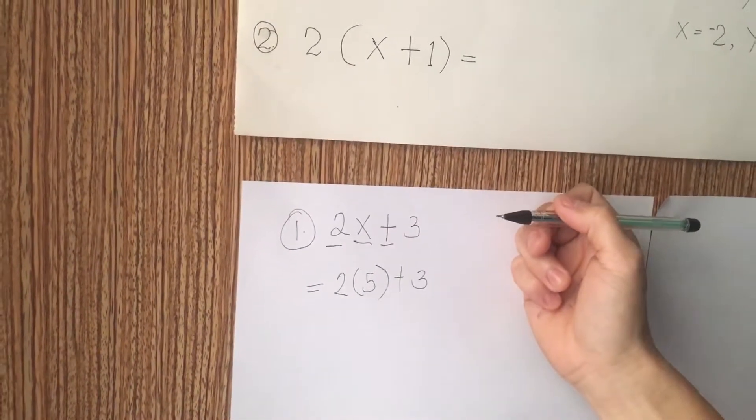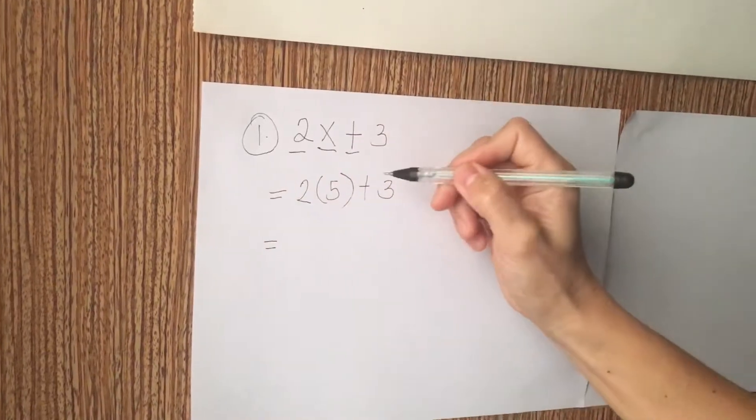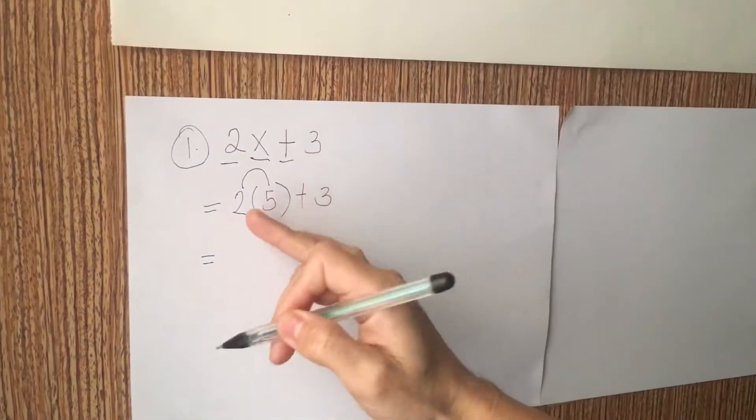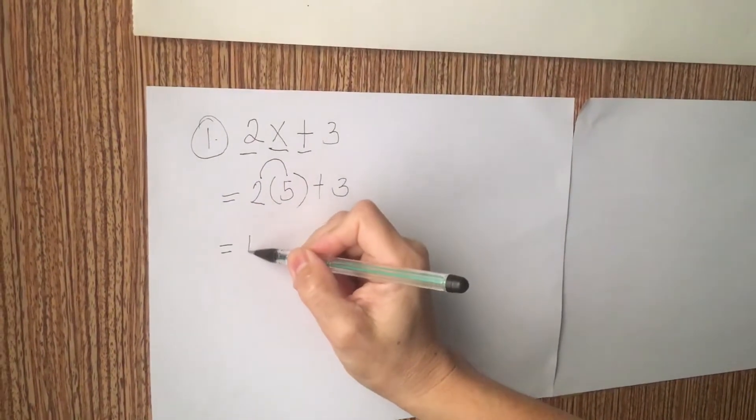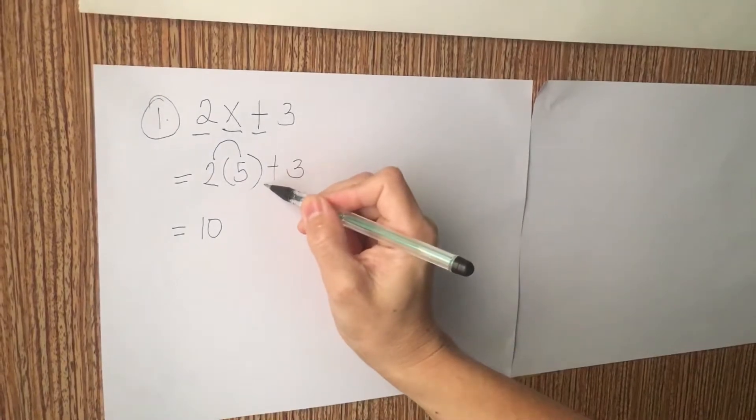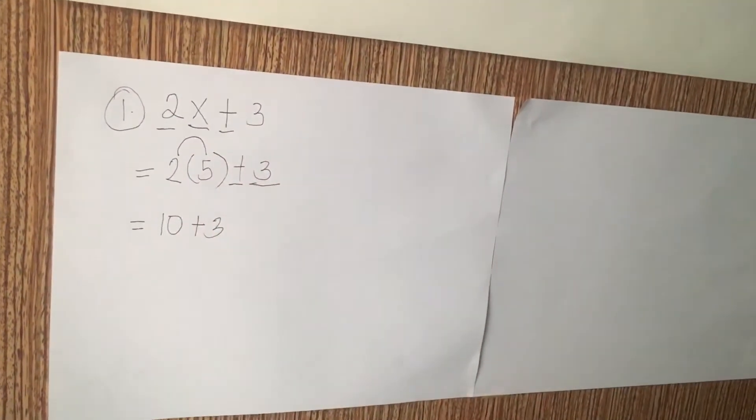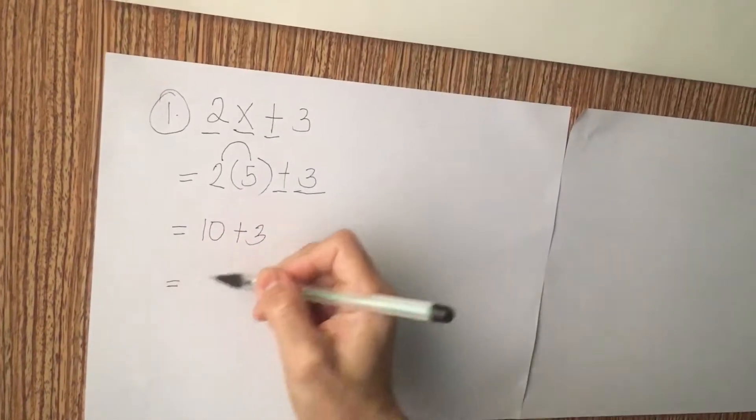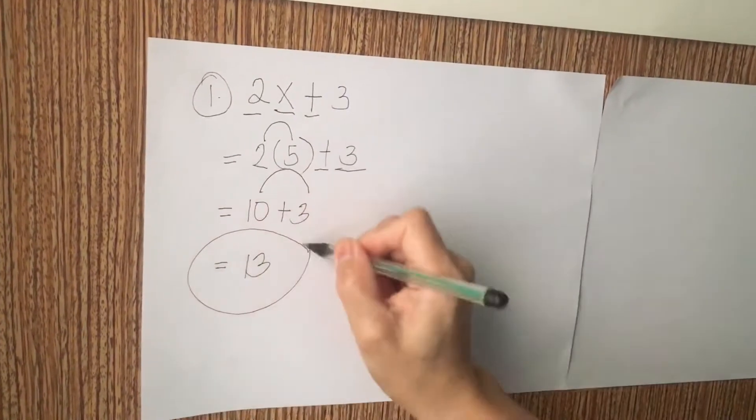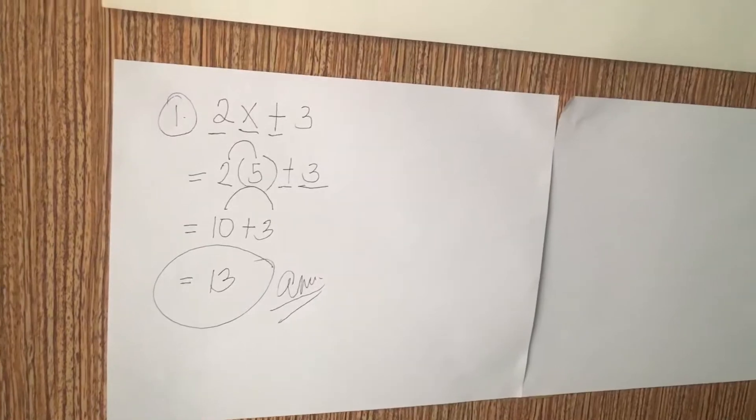And what is the next? Is that the final answer? No, we're not done yet. We are going to multiply 2 to 5. 2 times 5. The answer is 10. Plus 3. It's just simple. Now, we are going to add 10 plus 3. The answer is 13. This will be our answer.